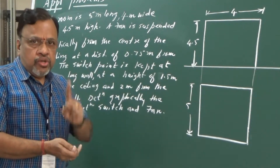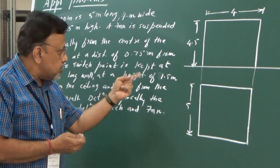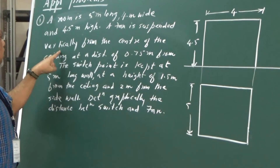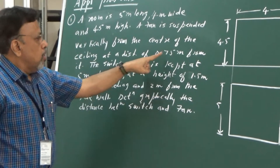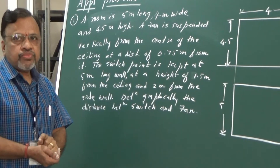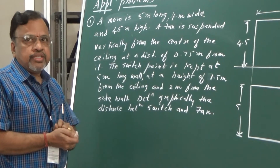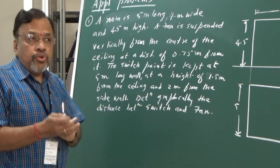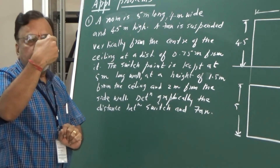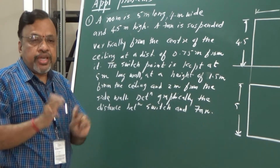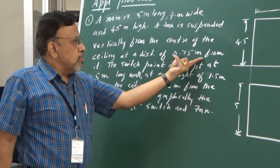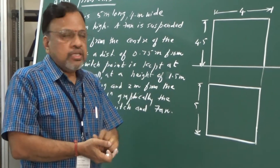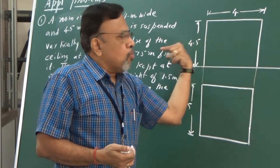We have drawn the top view of the room. Now the purpose is to locate the position of the fan as described in the problem. It is given that the fan is suspended vertically from the center of the ceiling at a distance of 0.75 meters from it. If I look from the front, I can see the distance from the ceiling. Whereas from the top view, I cannot see that particular distance. So 0.75 meters will be seen in the front view. In this figure, this is the ceiling, this is the floor, and the others are walls.